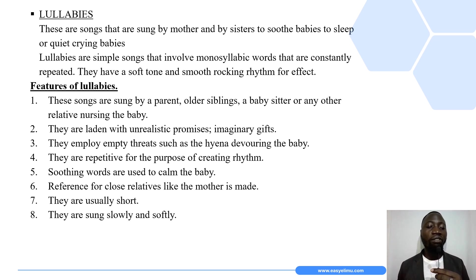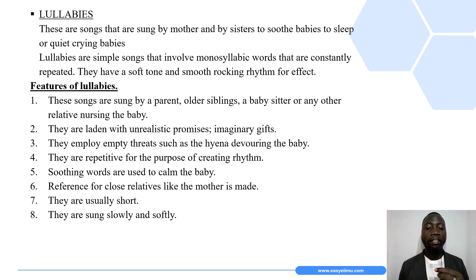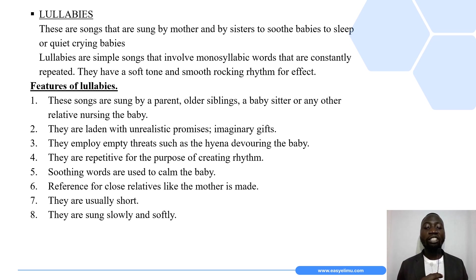The second feature of lullabies is that they are laden with unrealistic promises — there are a lot of imaginary gifts in these songs. They also employ empty threats to the babies, such as a hyena coming to get the baby, in order to make them keep quiet.